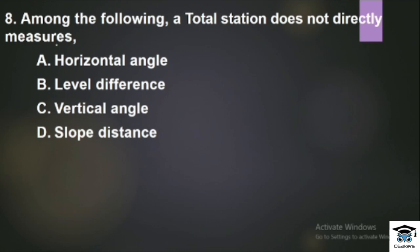Question: Among the following, what does a Total Station NOT directly measure? The Total Station measures using an electronic theodolite and EDM. What it does not directly measure is called Level Difference — that is Level Difference.